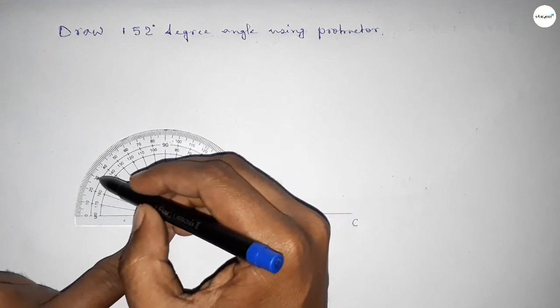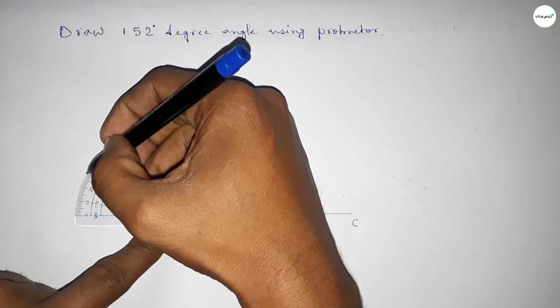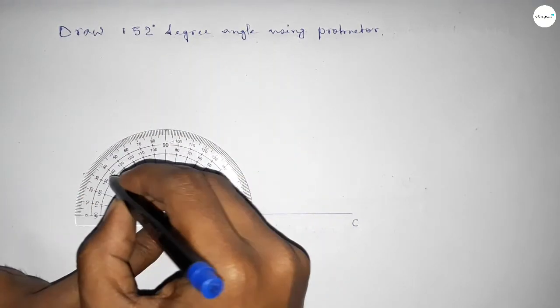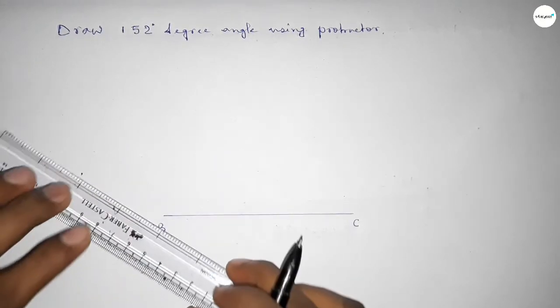140, 150, so this is 150, 151, 152. So this is 152 degrees. Now joining this side to get the 152 degree angle.